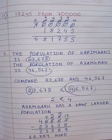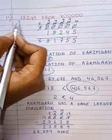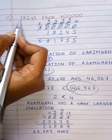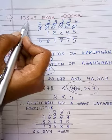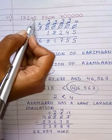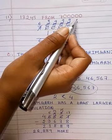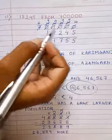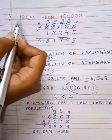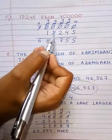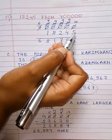Next sum: subtract 18,245 from 7,00,000. First write down 7,00,000, then 18,245.